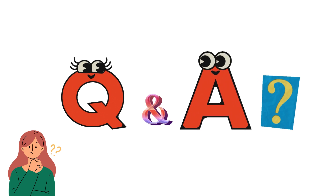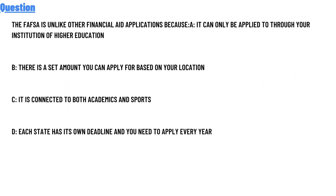Our today's question is: the FAFSA is different from other financial aid applications because — Option A: it can only be applied to further your interest in terms of higher education. Option B: there is a set amount you can apply for based on your location. Option C: it is conducted for both academics and sports. Option D: each state has its own deadlines and you need to apply every year.